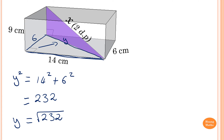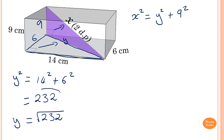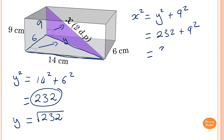Now we can find x. This side here is 9 centimeters — the height of the rectangular prism. x is the longest side because it's opposite the right angle, so we add. x squared equals y squared plus 9 squared. Noting that y squared is 232, we substitute: 232 plus 9 squared, which gives 313.